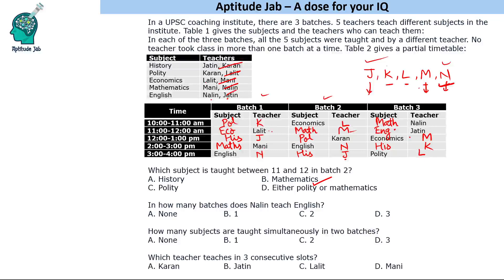In batch 3 Nalin is not teaching English, so Nalin teaches English in two batches. Third question: how many subjects are taught simultaneously in two batches? Looking at each time slot — quality, economics, math — none of them match. In 11 to 12 none, in 12 to 1 none, in 2 to 3 none, in 3 to 4 none. So no subjects are taught simultaneously in two batches.